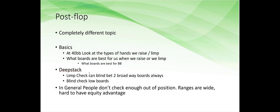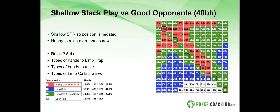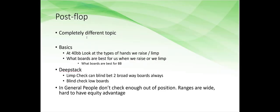At 40 big blinds shallow, we raised all the broadway hands pre-flop, so when we limp and the big blind checks, we don't have as many broadway hands in our limping range. The lower boards actually become a little better for us because we have more of the lower hands in our limp range. When we raise, we want to see broadway cards on the board — those are our best boards to continuation bet.